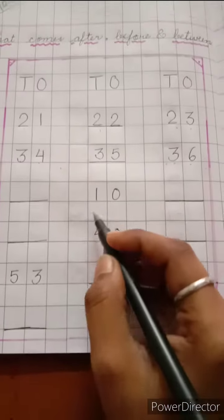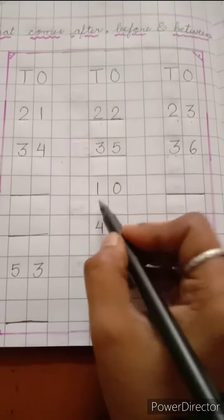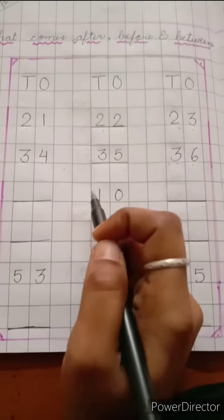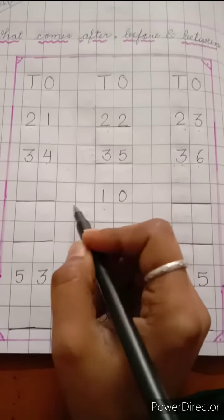And next you can see 10, and what comes before 10?